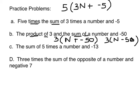And c: the sum of five times a number. Five times a number would be written 5n and negative 13. So I can either put plus negative 13 or I can put 5n minus 13. A little tricky, but if you have questions just ask, I'll be glad to help you.